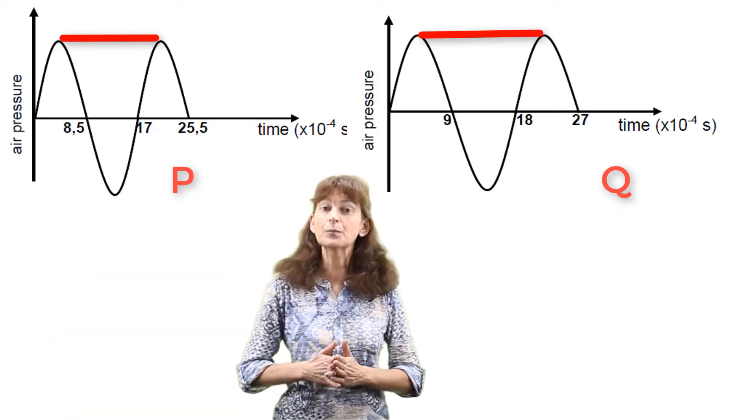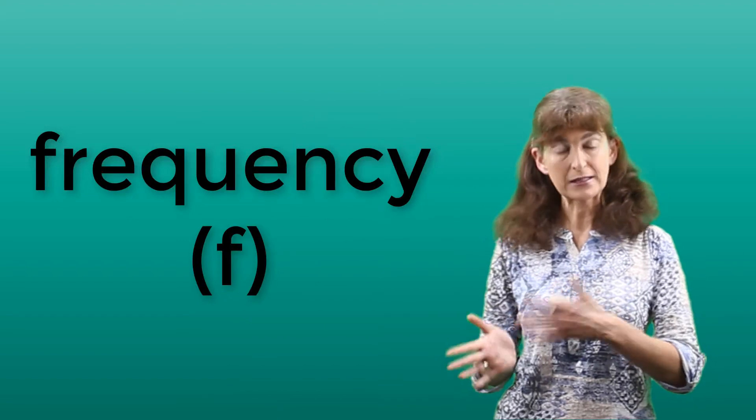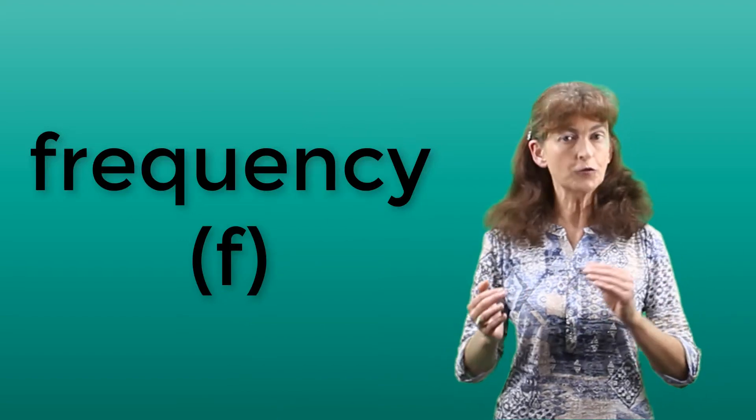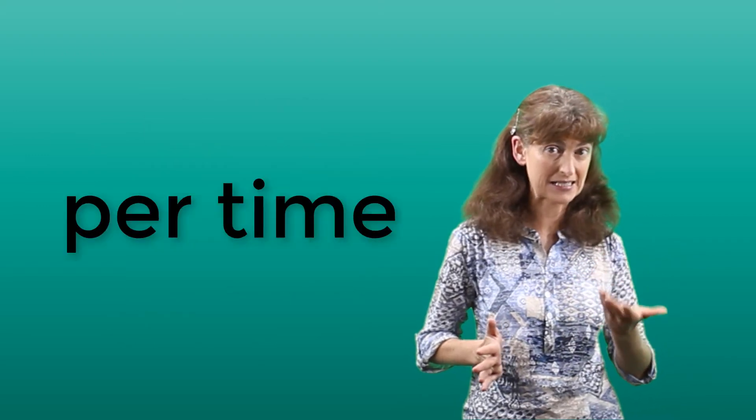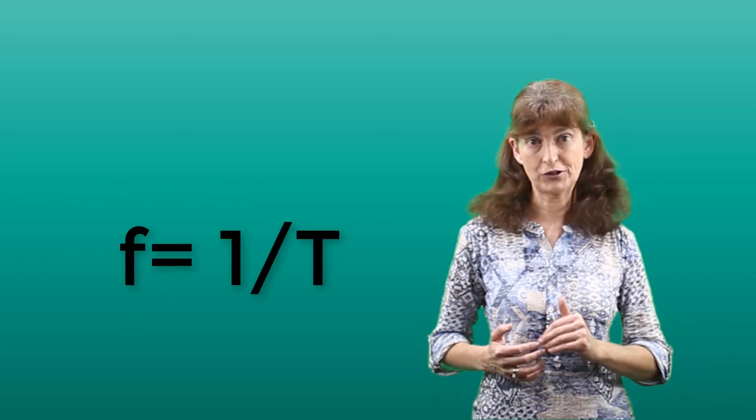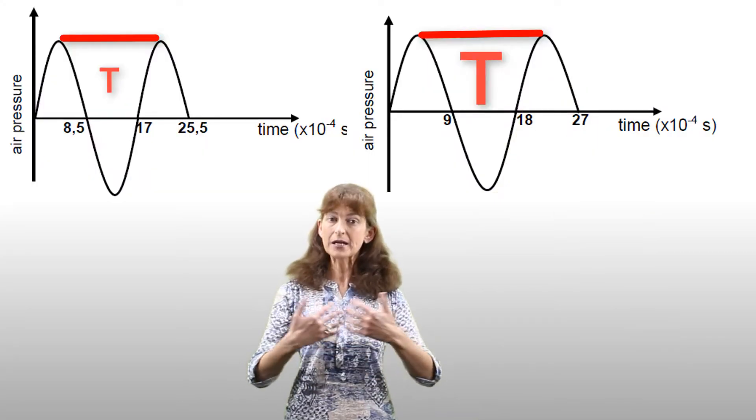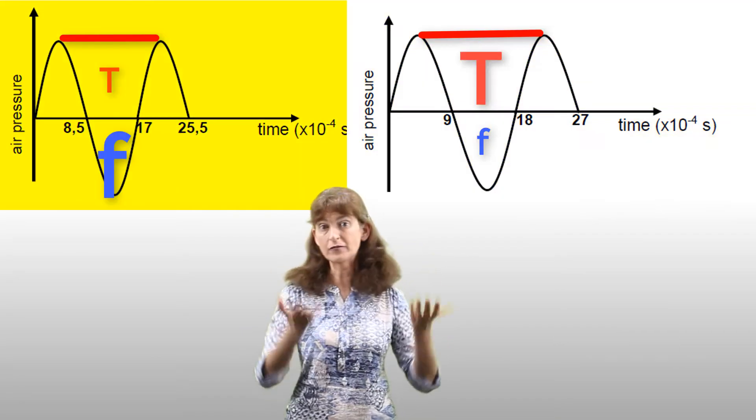We can see that the period is longer for Q. Often when we speak about waves, we refer to frequency rather than period. Frequency refers to how many waves pass a point in a time, for example, in a second. Frequency is the inverse of period. When period is big, frequency is small, and vice versa.